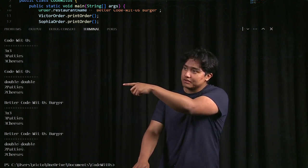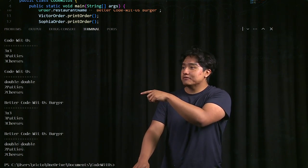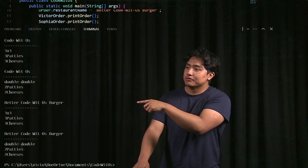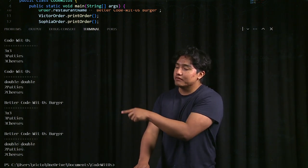Sophia's order which was a double double with two patties and two cheeses, and then after we reset the class variable to equal better codewithus burger, it changes the output for both of those instances.